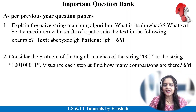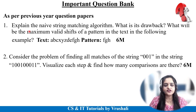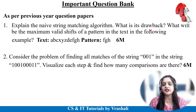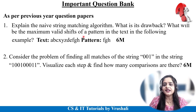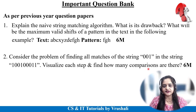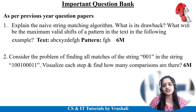Now here are some important exam questions. As per previous year question papers, they ask these questions for 4 to 6 marks. The first question is: explain the naive string matching algorithm and what are its drawbacks? The drawback is that it uses a linear pattern matching concept, which requires more time — the time complexity is high. You may also be given a text and a pattern and asked to find the valid shift values. The second question asks you to visualize each step and count how many comparisons are made when finding all matches of a given string in a text — similar to Example 1.